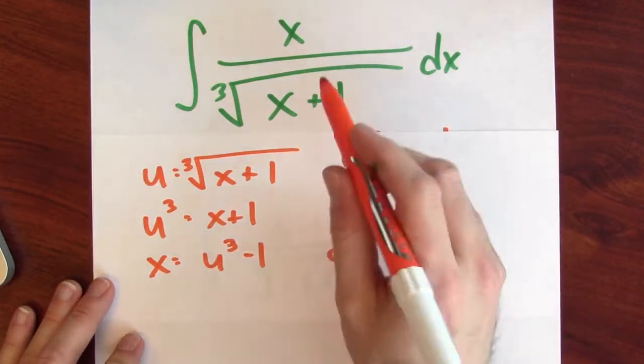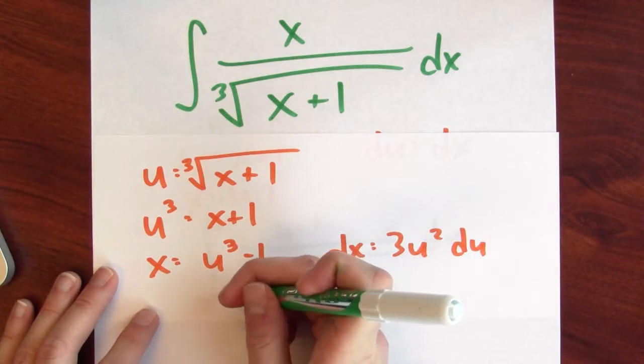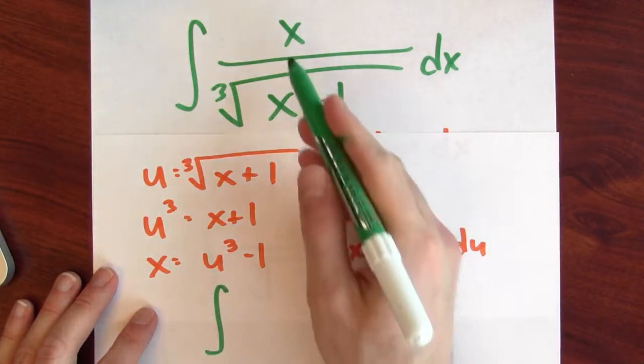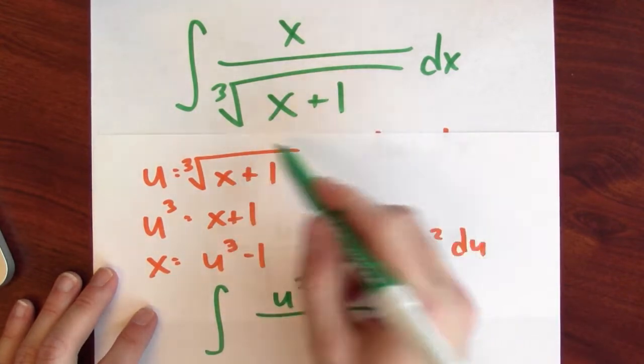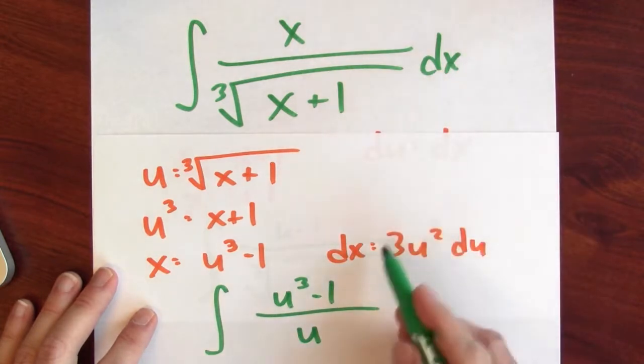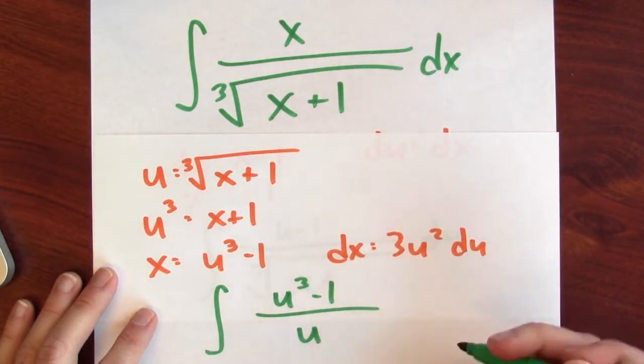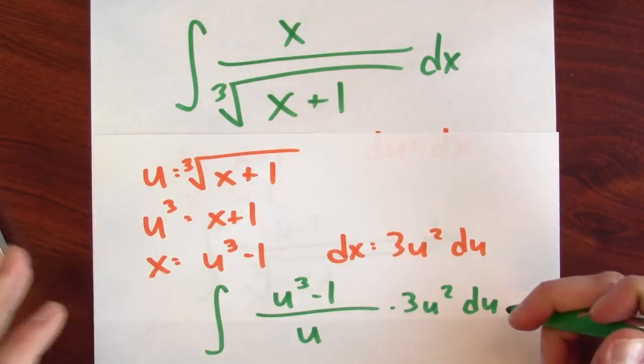This transforms this integration problem to the anti-derivative of x now becomes u cubed minus 1. The whole denominator just becomes u. And then the dx here is now a 3u squared du. So I'll write 3u squared du.